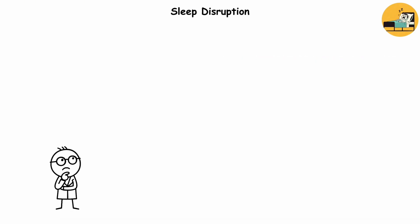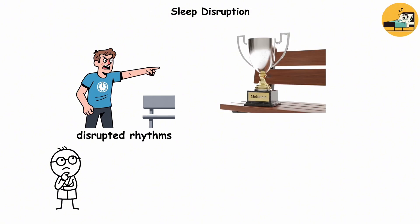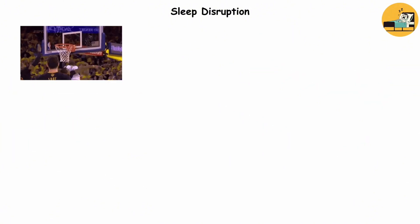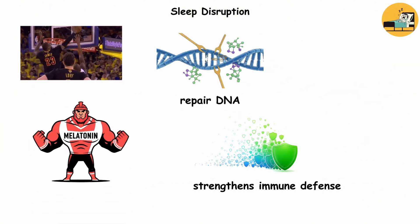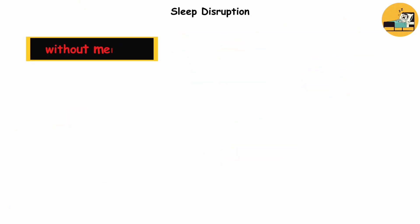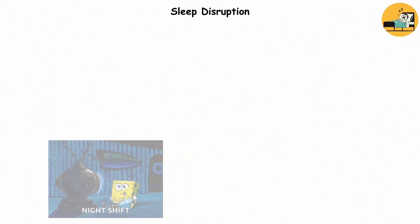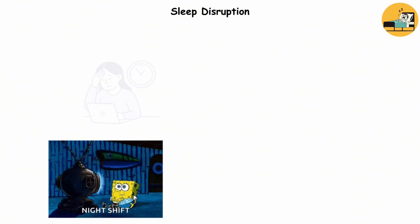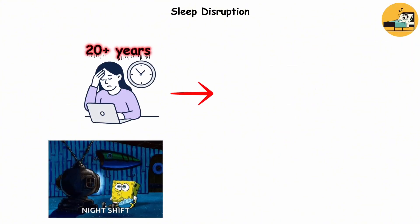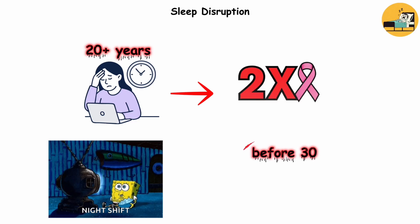Here's the kicker. Disrupted rhythms bench melatonin. Your star defensive player. Melatonin helps repair DNA, strengthens your immune defense, and keeps hormones in balance. Without it, your defense line collapses, and cancerous cells can slip through and score. Night shift workers see the biggest losses. Women working nights for 20-plus years face double the breast cancer risk, especially if they started before 30.